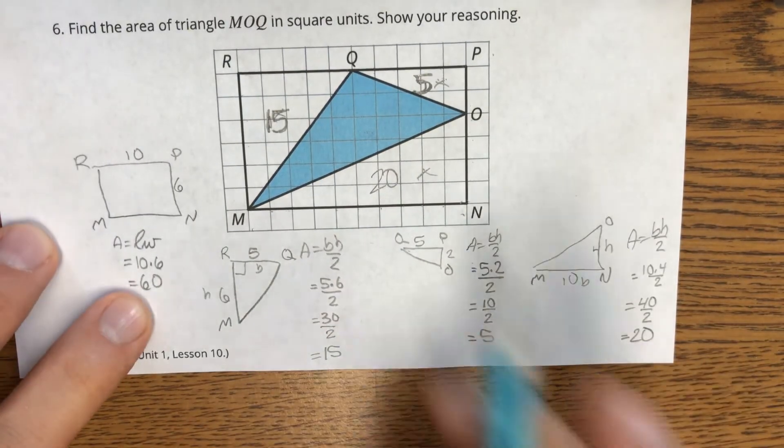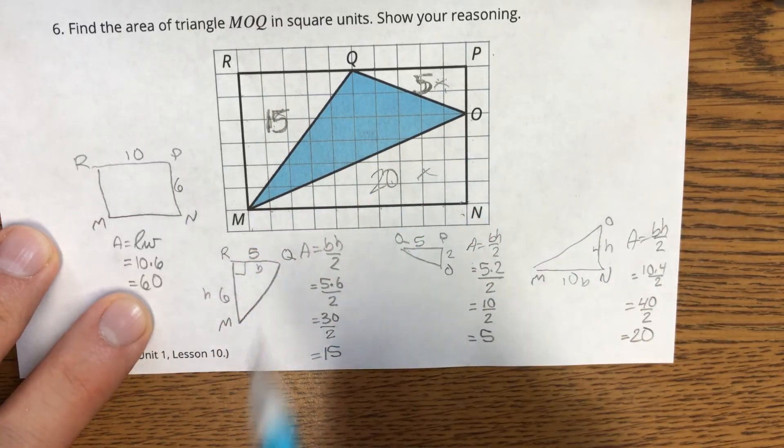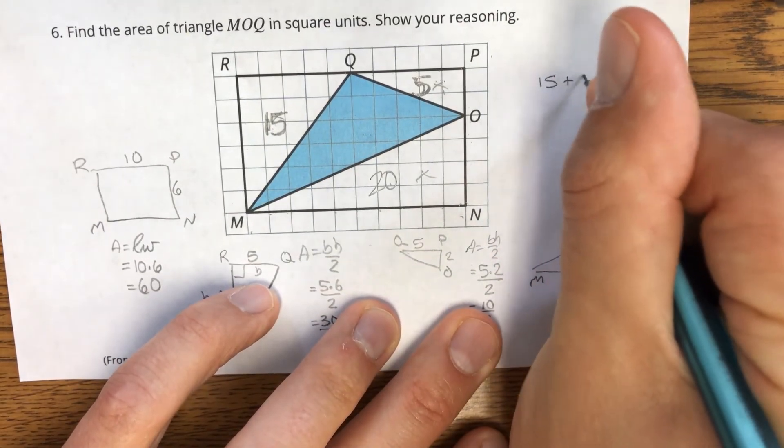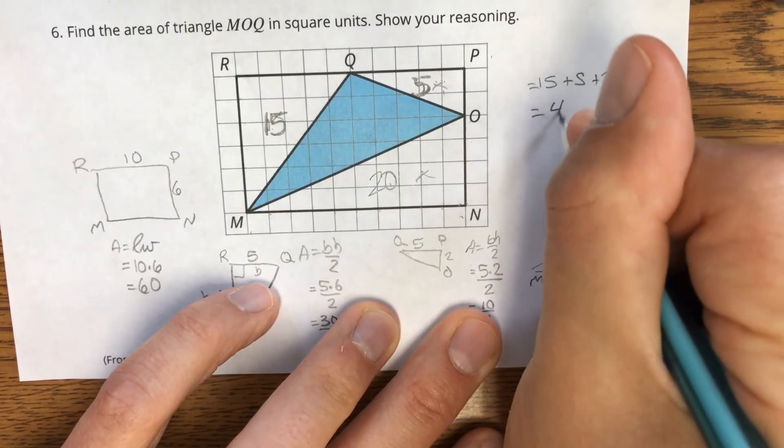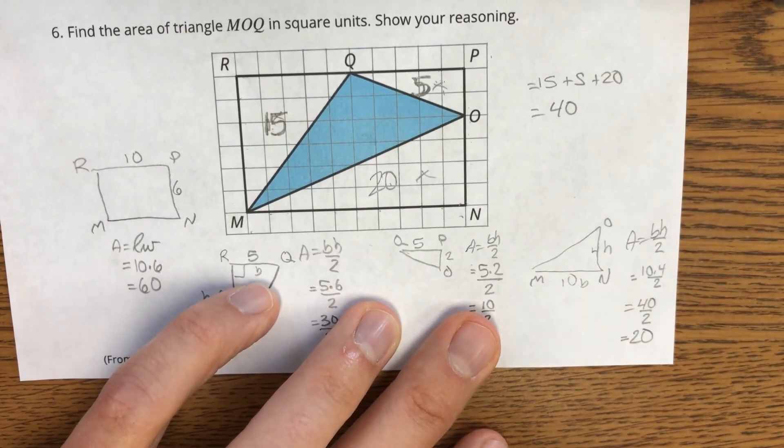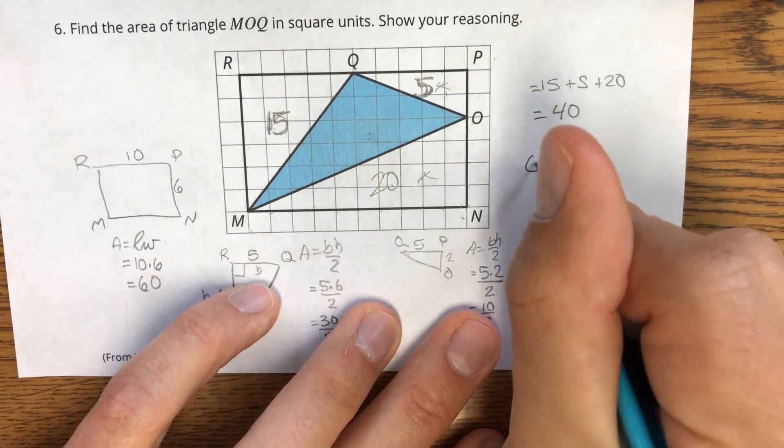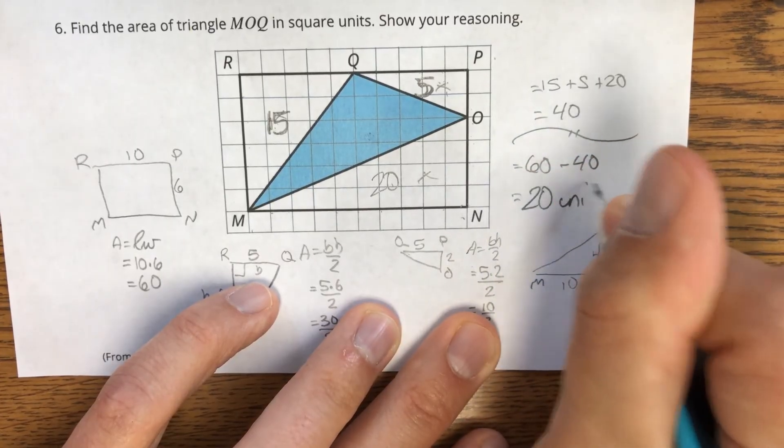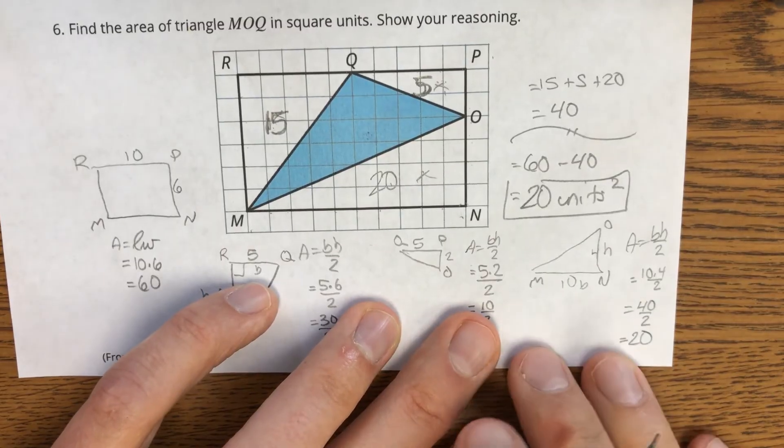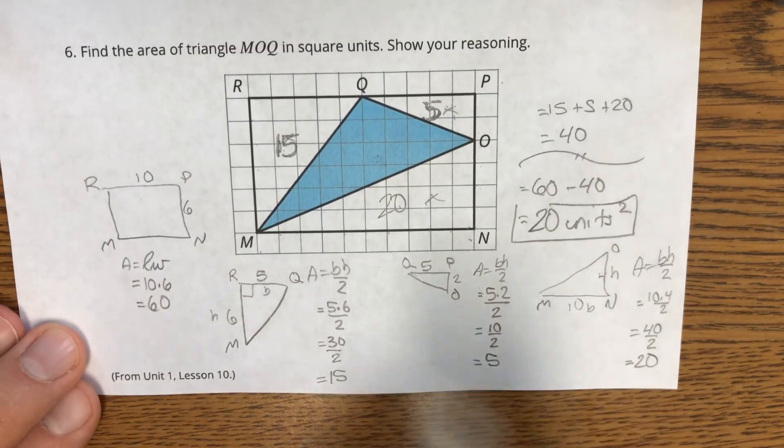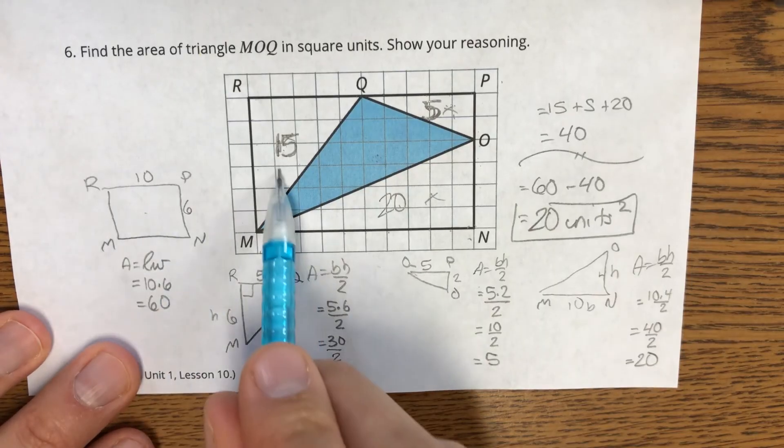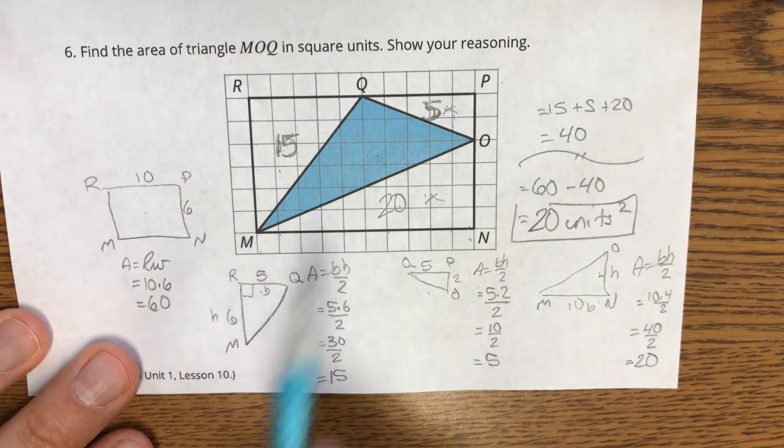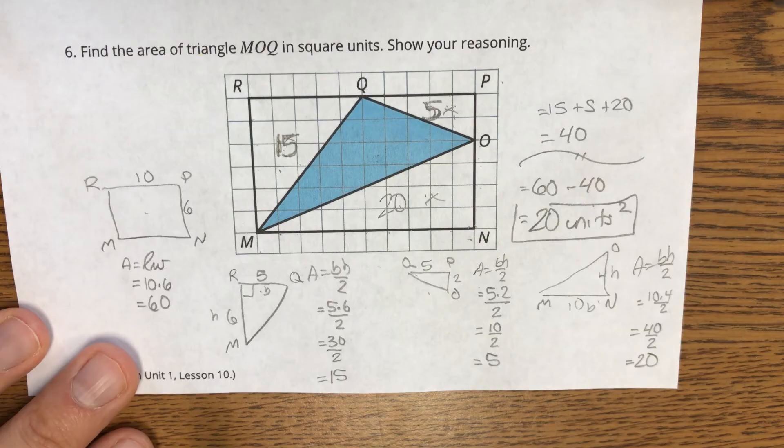So now the entire rectangle is 60. The pieces we subtract out are 15, five, and 20. So if I take the 15, the five, and the 20, that adds up to 40. That's the area I need to get rid of to find the blue triangle. So 60 minus 40 gets me an area of 20 square units for M, O, Q. So again, just to recap, we found the area of the large rectangle. We found the area of the three smaller triangles, subtracted those out to get the area of what was left, the blue triangle, M, O, Q.